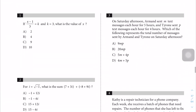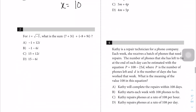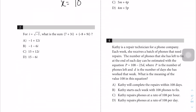Question number one: x minus 1 over 3 is equal to K, and K is equal to 3. So it is x minus 1 over 3 equals 3, then 3x equals 9 minus 1, so you move the minus 1 over there, giving you 10. The right answer is B.